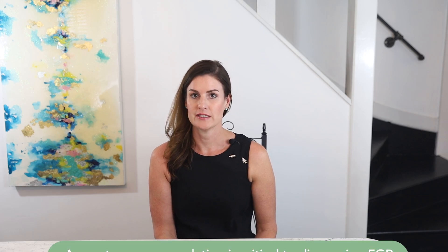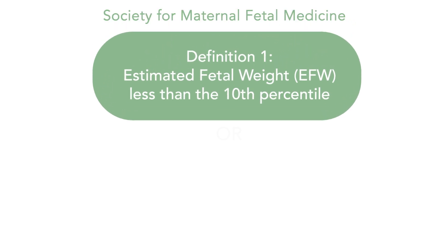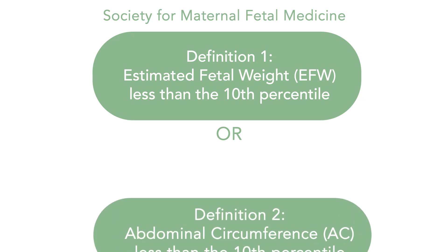This diagnosis is made by ultrasound measurements. Accurate pregnancy dating is critical to diagnosing a baby with fetal growth restriction. Pregnancy dating is best established when the crown rump length of the baby is measured in the first trimester and is used to either confirm menstrual dates or assign a new date. In the United States, the Society for Maternal Fetal Medicine defines fetal growth restriction as one of two definitions: the first is an estimated fetal weight, or EFW, less than the 10th percentile, or the second is an abdominal circumference, or AC measurement, less than the 10th percentile.